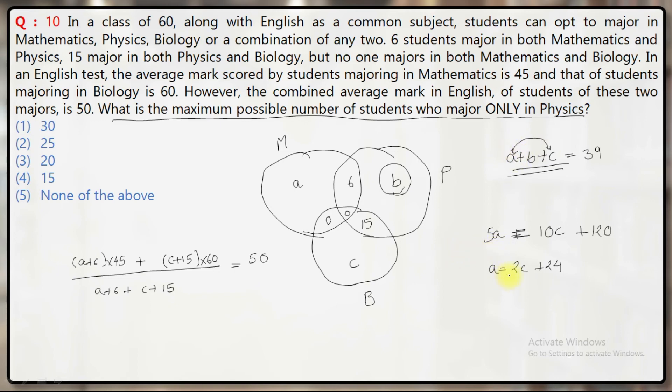The equation says a is twice c plus 24. Let's minimize these values. If I minimize c by putting c equals 0, then a equals 24. So the minimum possible value of c is 0, and the minimum possible value of a is 24.